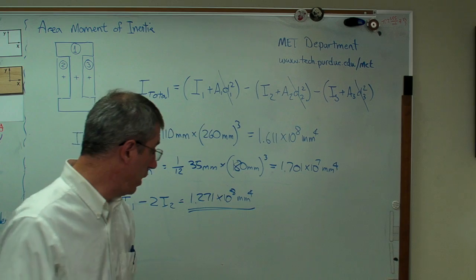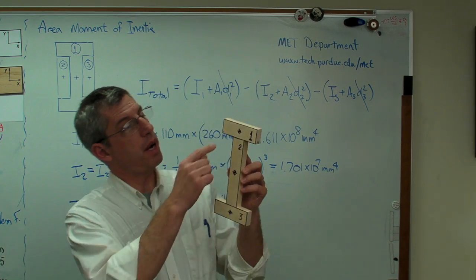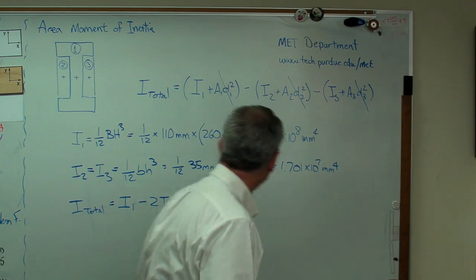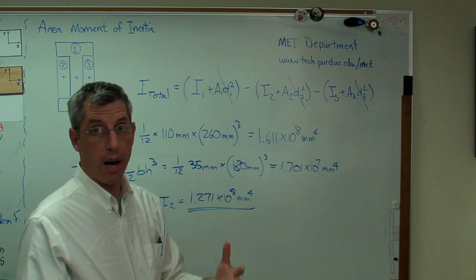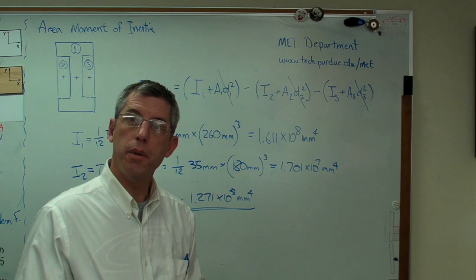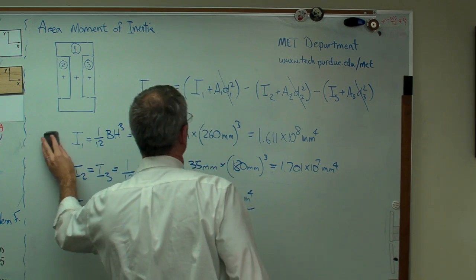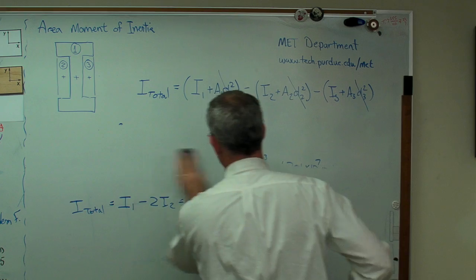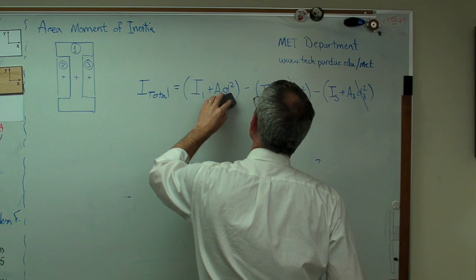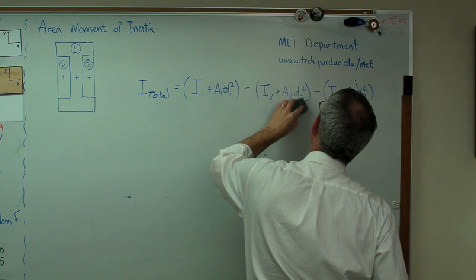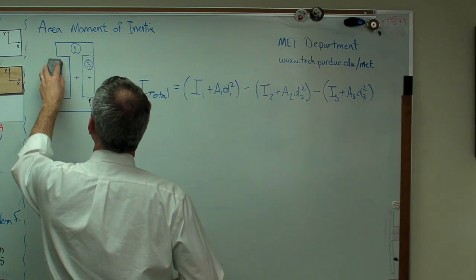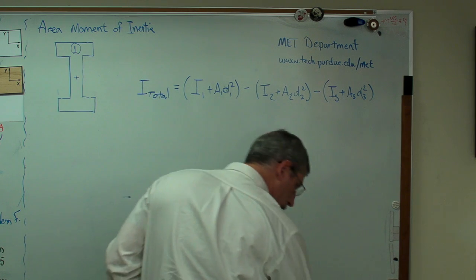I'm going to show you now that if you build the I-beam up out of individual boxes like this, 1, 2, and 3, you're going to get the same answer. We have to do this a little bit differently. We're adding three positive areas now. That term is going to be positive and that term is going to be positive. Let me erase my board here and we'll do this again. Remember this number right here, we're going to see that one again.